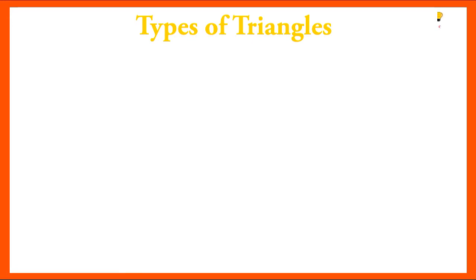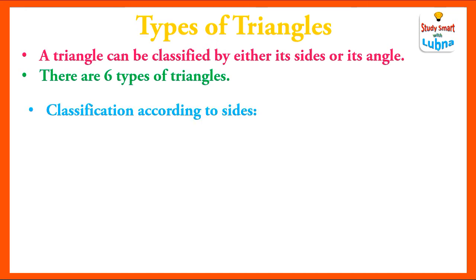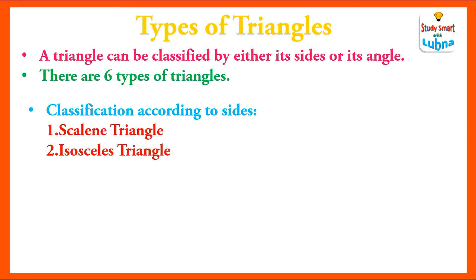Types of triangle: a triangle can be classified by either its sides or its angles. There are six types of triangles. According to their sides: number one is a scalene triangle, number two is isosceles triangle, and number three is equilateral triangle.